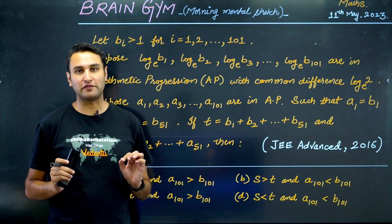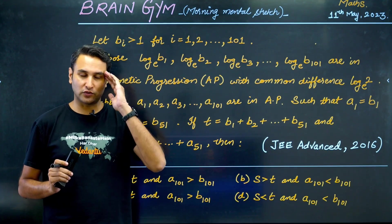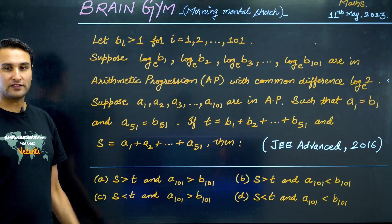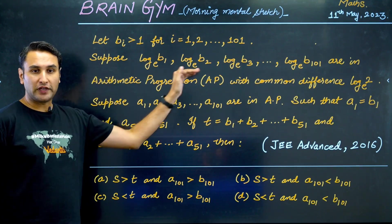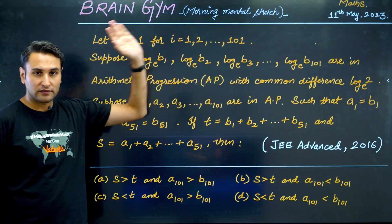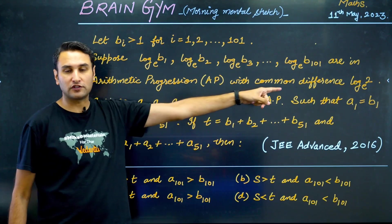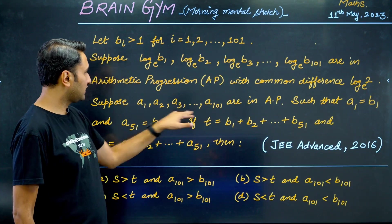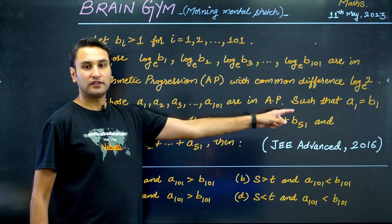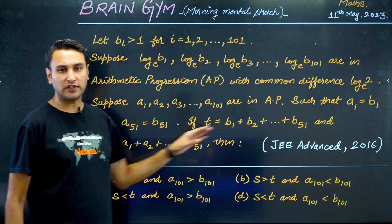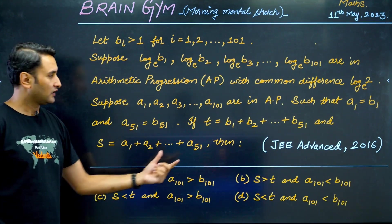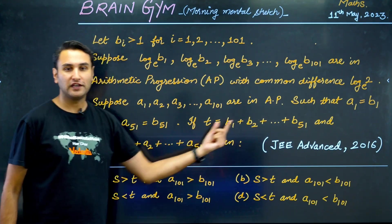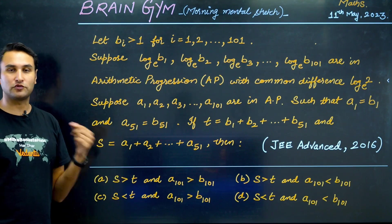Some amazing concepts will be revised through this problem today. It says there is a sequence log b1, log b2, log b3 - it's in AP with common difference log 2. There's another sequence - the a-sequence - which is also in AP. Some information given: a1 equals b1, and a51 equals b51. Then there's a summation T of terms of b and a summation S of terms of a.